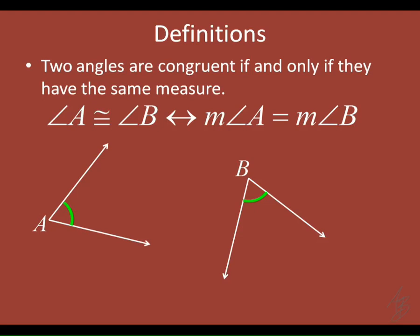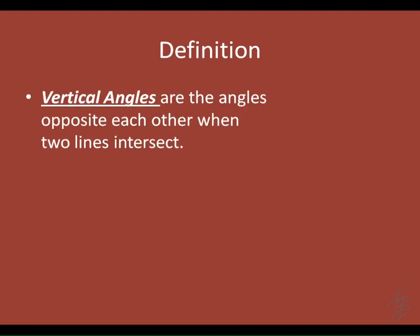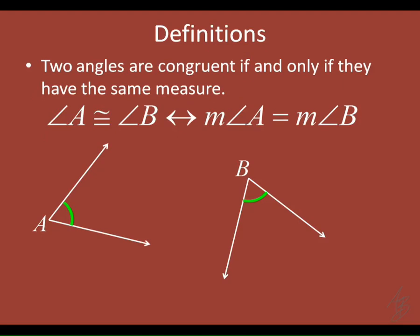When we have more than one set of congruent angles in a diagram, we need different symbols. We can use single tick marks, double arcs, or double tick marks inside the angles. As long as two angles have the same symbol, that means they're congruent to each other. It's useful to have more than one way to mark congruence when some angles are congruent to one set but not another.